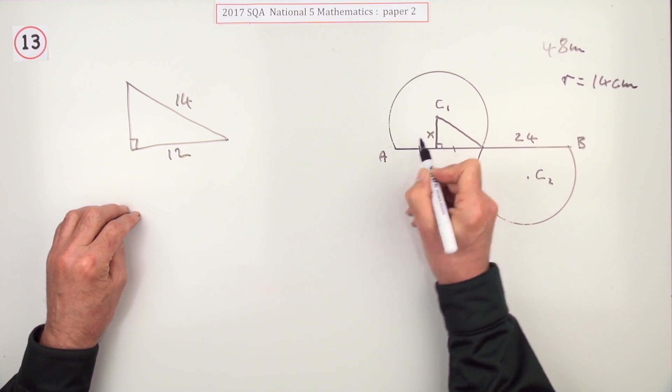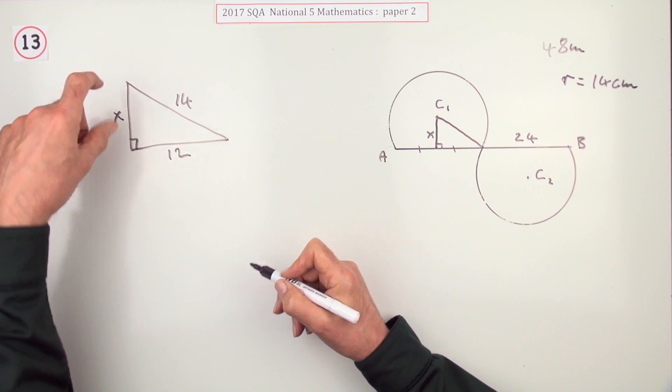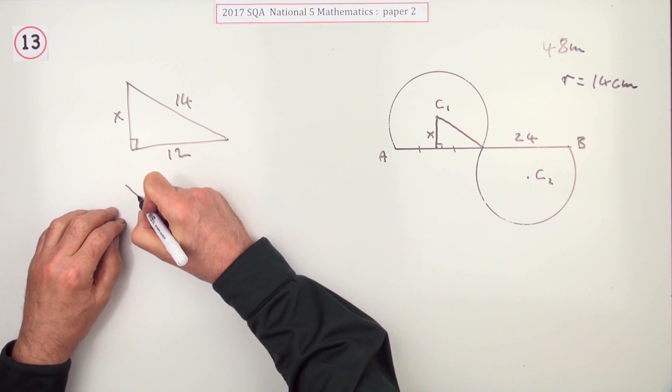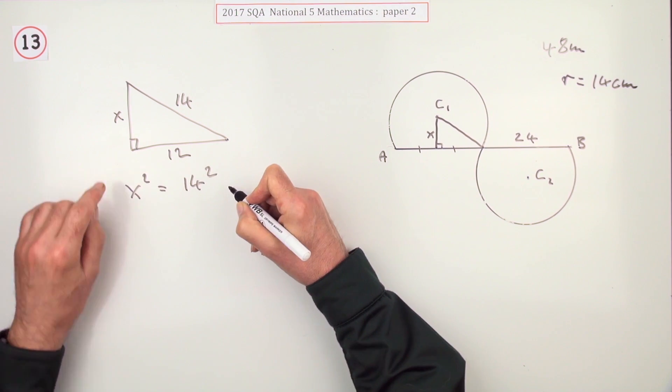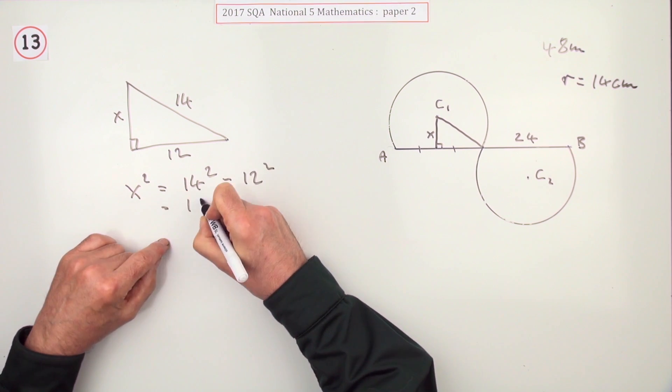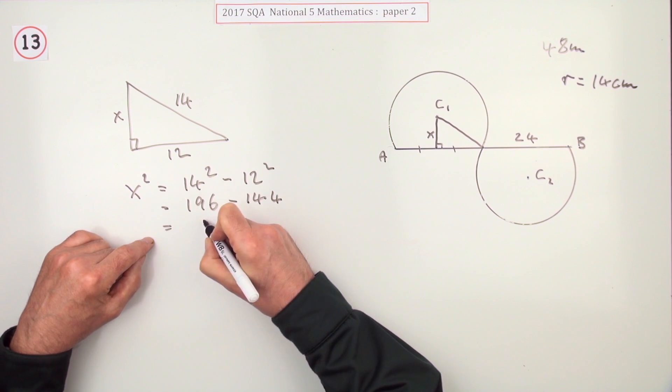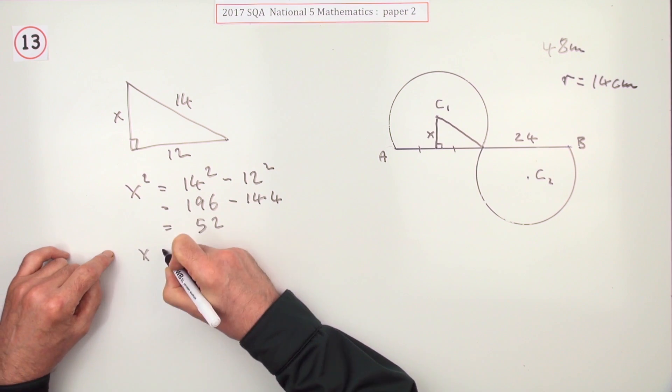So I'll just do that. x squared will be 14 squared, and it's shorter so it must be minus 12 squared. You could just type that in: 196 minus 144, which is 52. So x is going to be the square root of 52. I'll have to type that in.